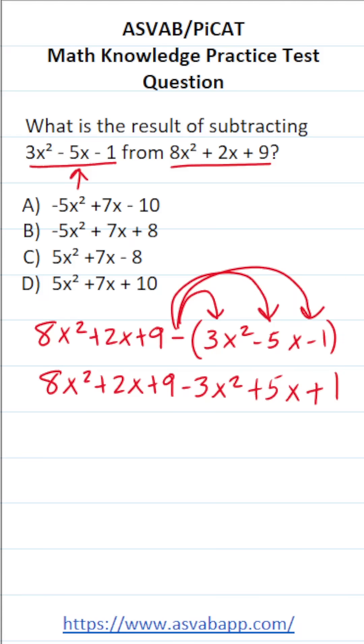Like terms are the same letter variables raised to the same power. So here I have 8x squared. Here's its corresponding like term. 8x squared minus 3x squared is going to be 5x squared. And now that I've combined those two like terms, I like to cross them out.